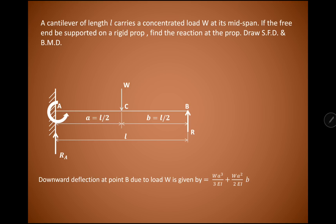In a regular cantilever we do not support the free end. To solve this example we need to understand the concept of slope and deflection. First, we visualize the arrangement as a simply a cantilever beam carrying point load W. The deflection at point B due to W is given by: WA³/(3EI) + WA²/(2EI) × B, where A = L/2 and B = L/2.